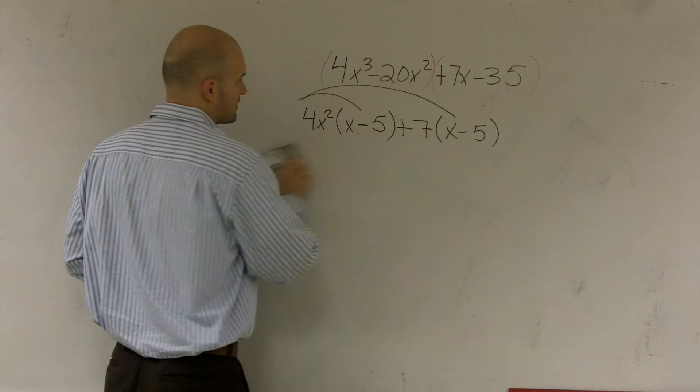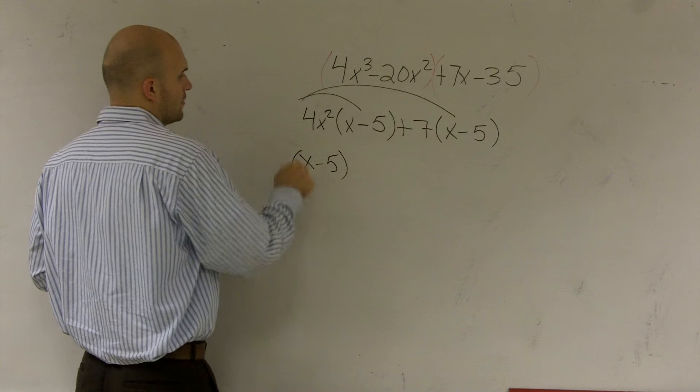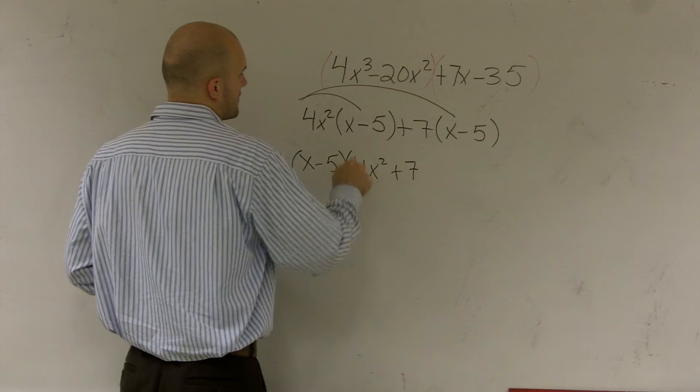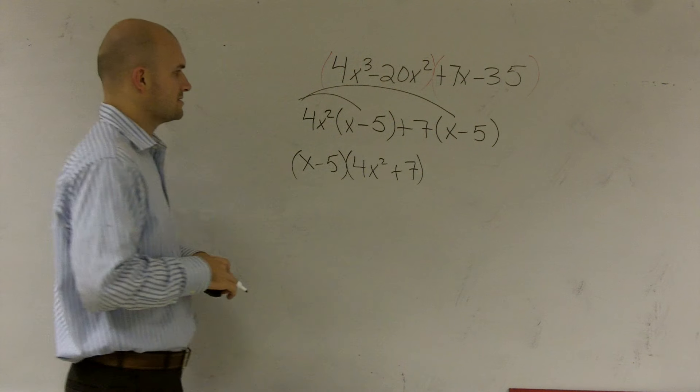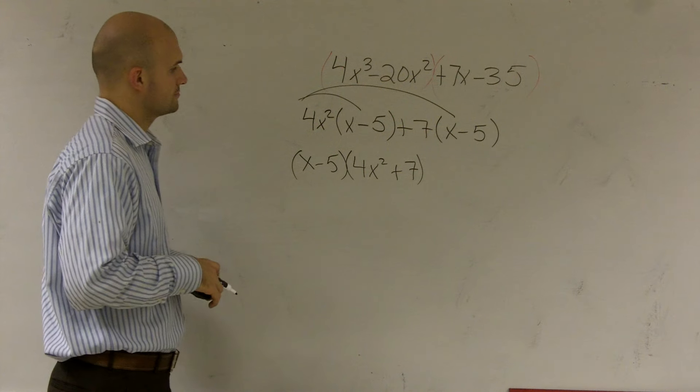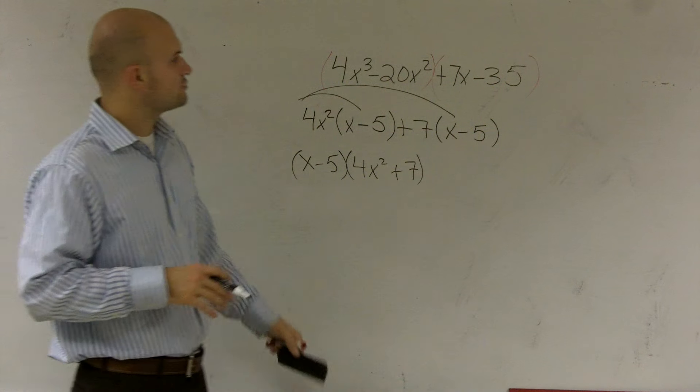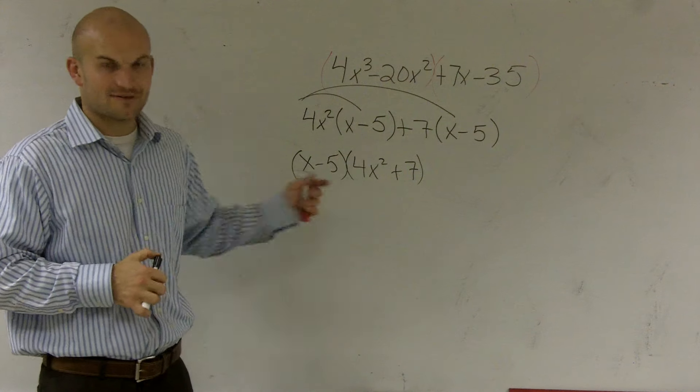Because that's really what's happening. I'm going to factor out now an x minus 5. So when I do that, when I factor out x minus 5, what's left over is 4x squared plus 7. Then I can write those as two factors, and now my polynomial with four terms has been factored.